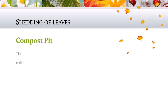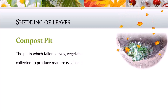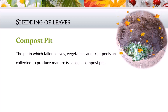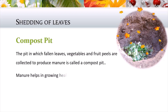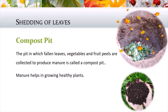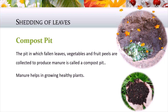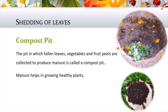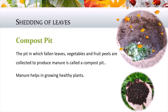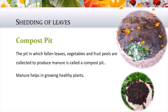The last topic of the chapter is the shedding of leaves. Plants shed their leaves mostly during the autumn season. We should not burn fallen leaves. Instead, we should collect them in a pit. Fallen leaves, vegetables, and fruit peels collected in a pit to produce manure form what is called a compost pit. After weeks of decay, these form manure.